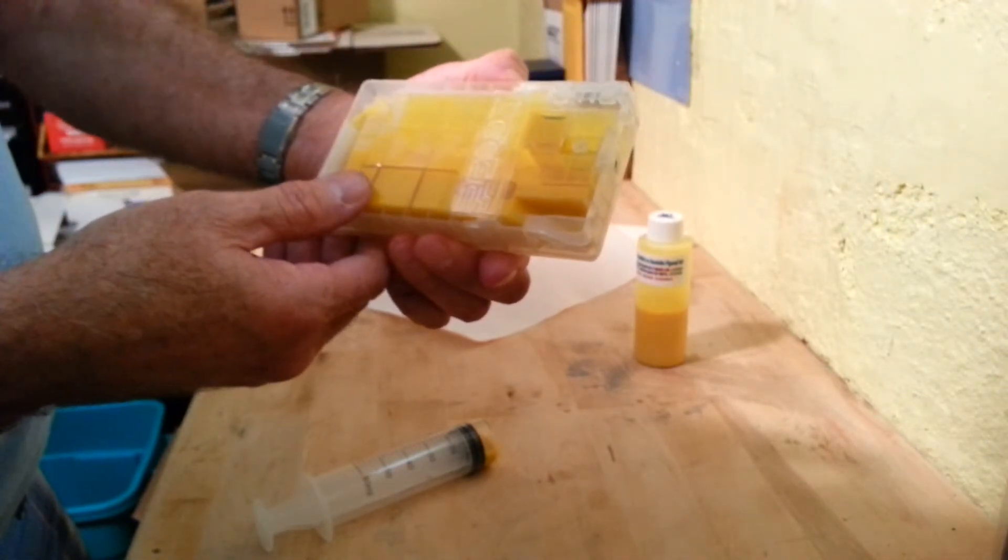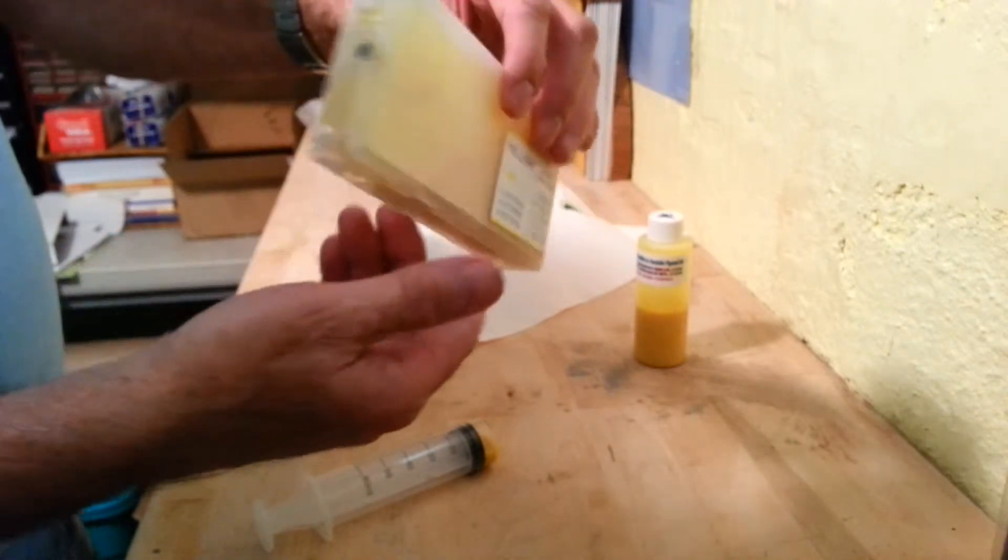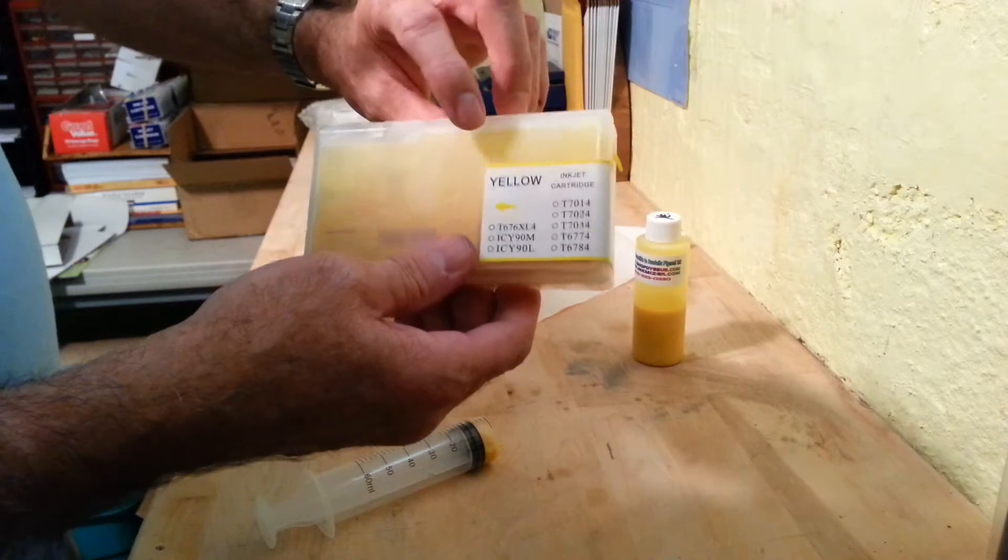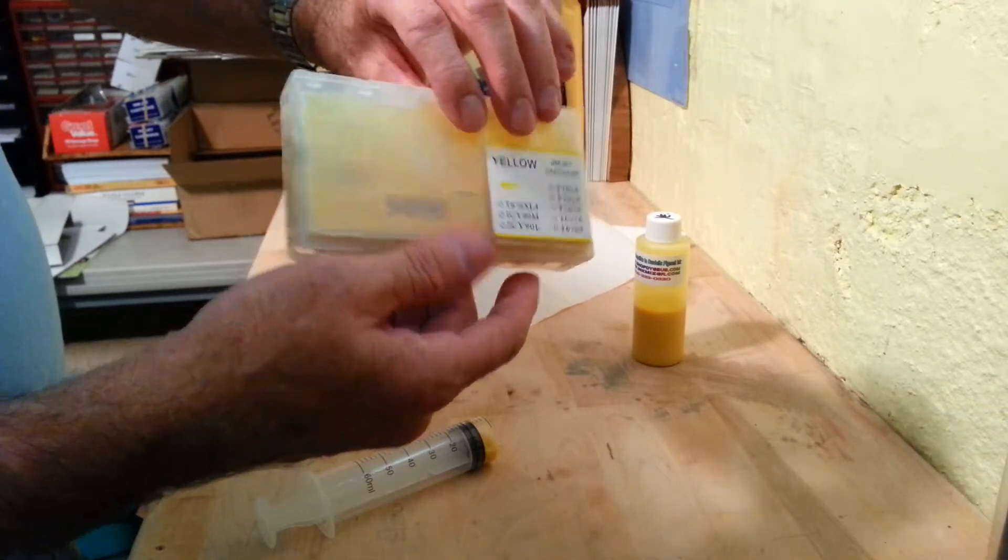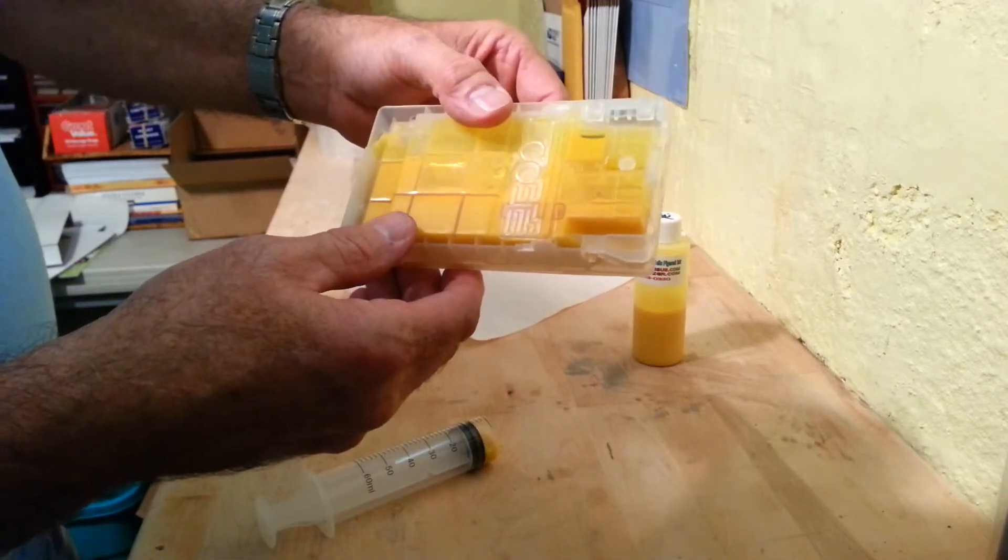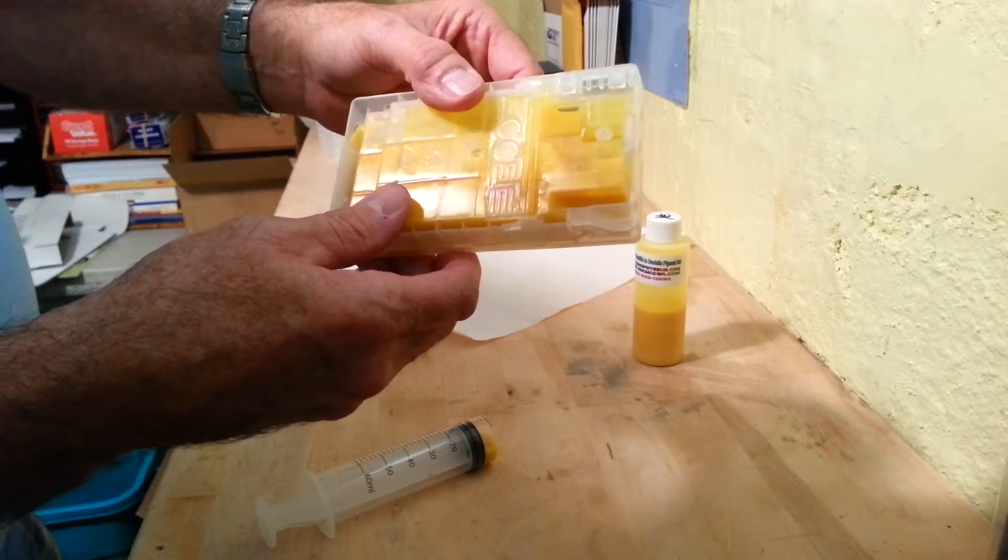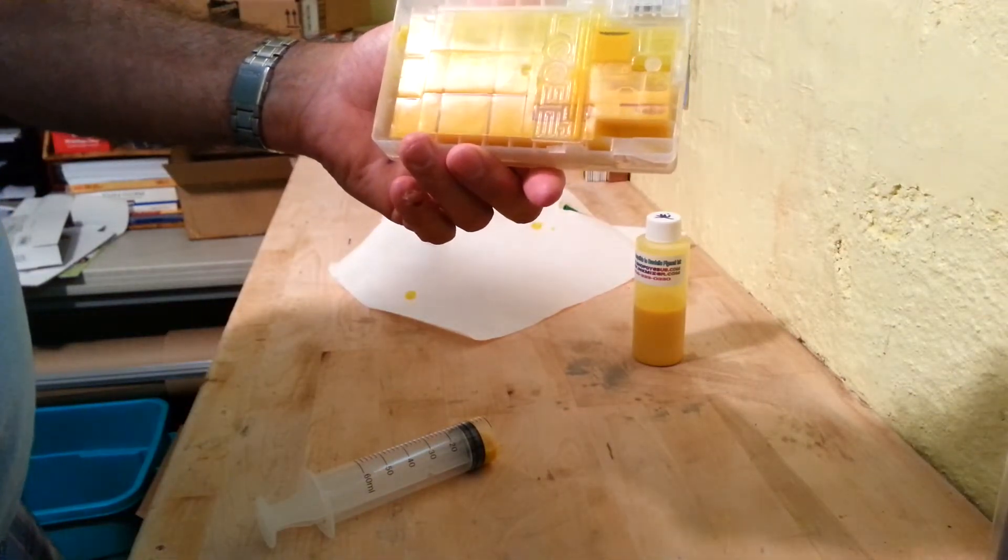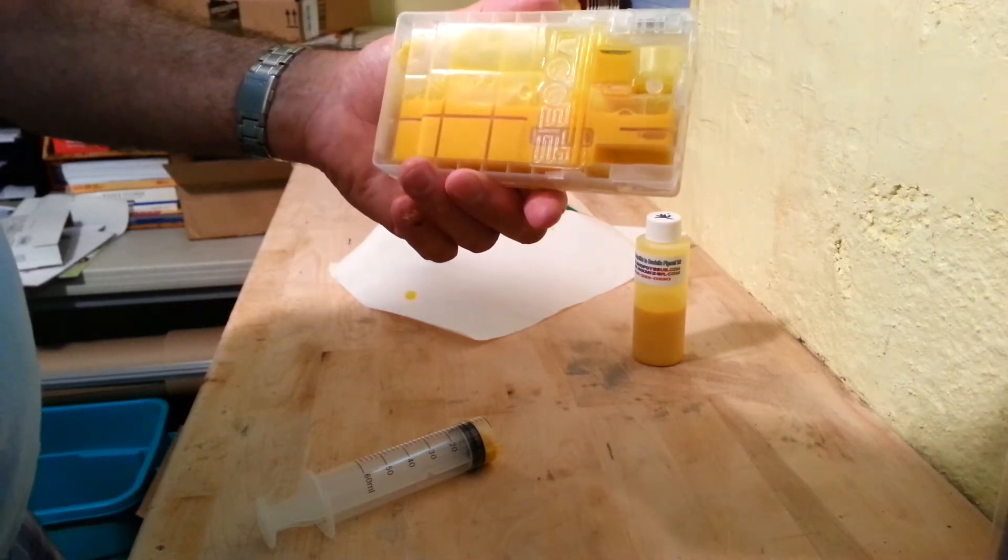You can purchase these at shopdyesub.com as well as inkmiser.com. This is a very cost efficient way to print. You'll find that the cost to print this way is probably going to run you approximately one-twentieth to one-tenth of the cost of purchasing Epson ink cartridges.